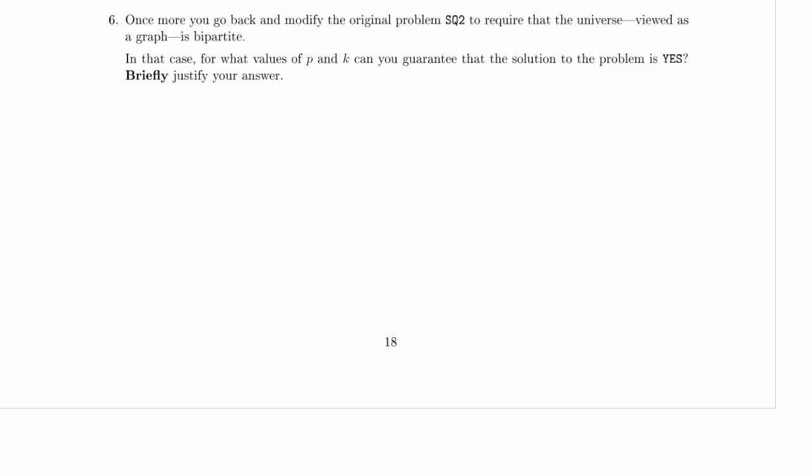We are on part 6 of problem 6. Once more, you go back and modify the original problem SQ2, not the one where P is less than or equal to 3, to require that the universe viewed as a graph is bipartite. In that case, for what values of P and K can you guarantee that the solution to the problem is yes? Briefly justify your answer.